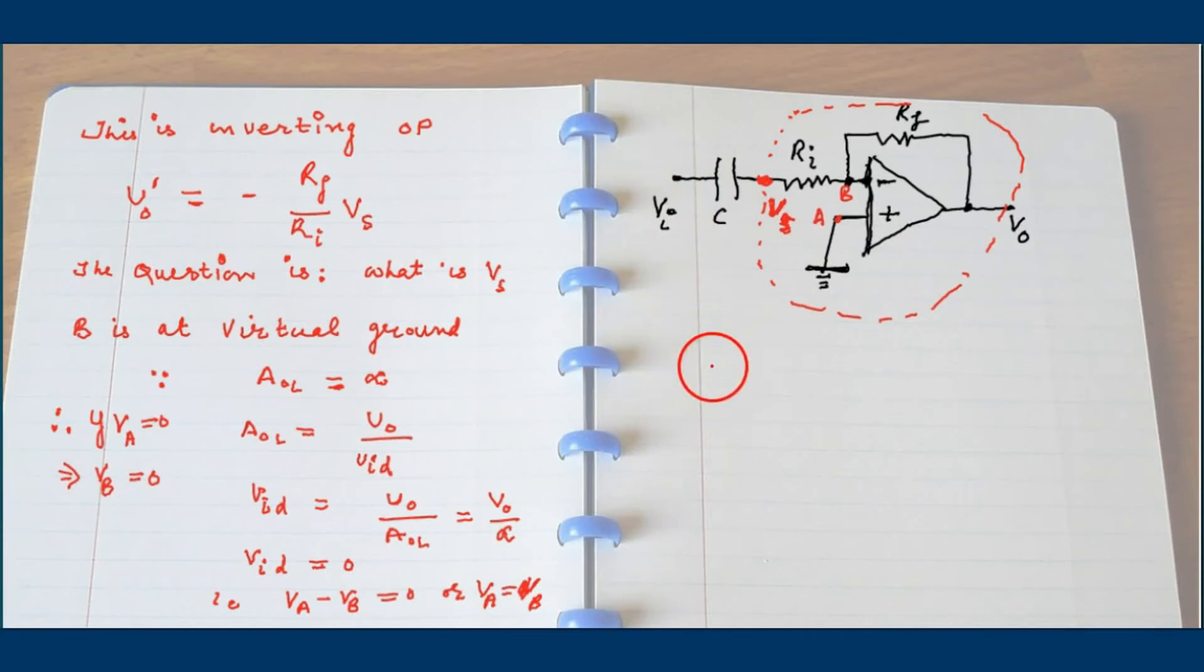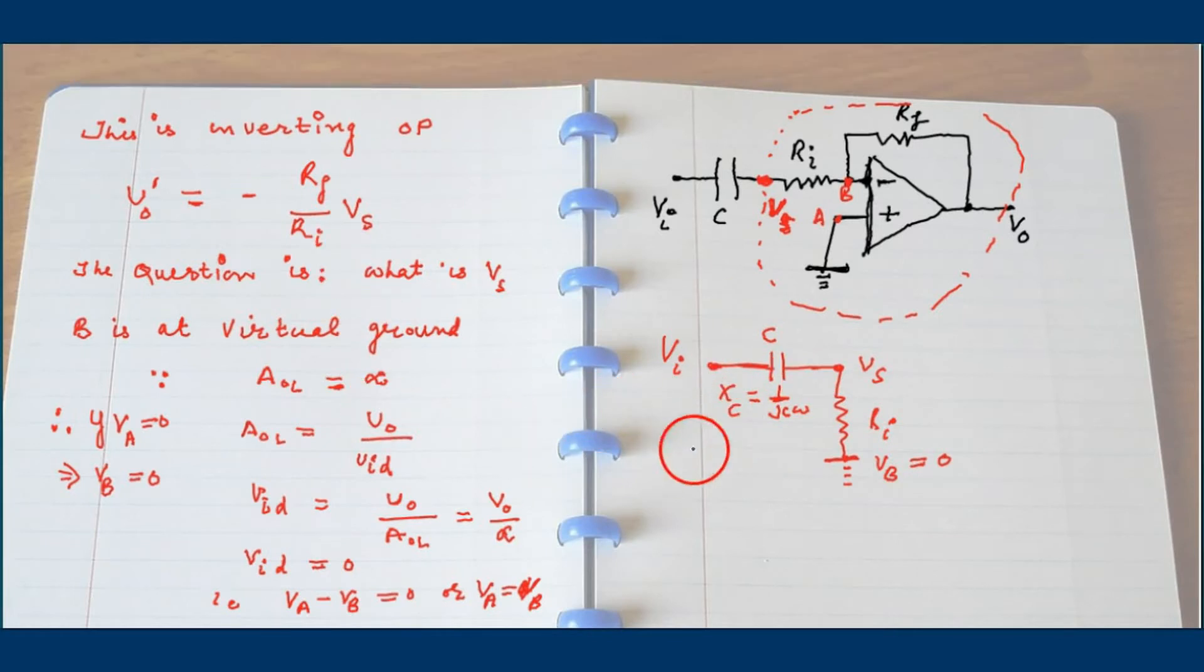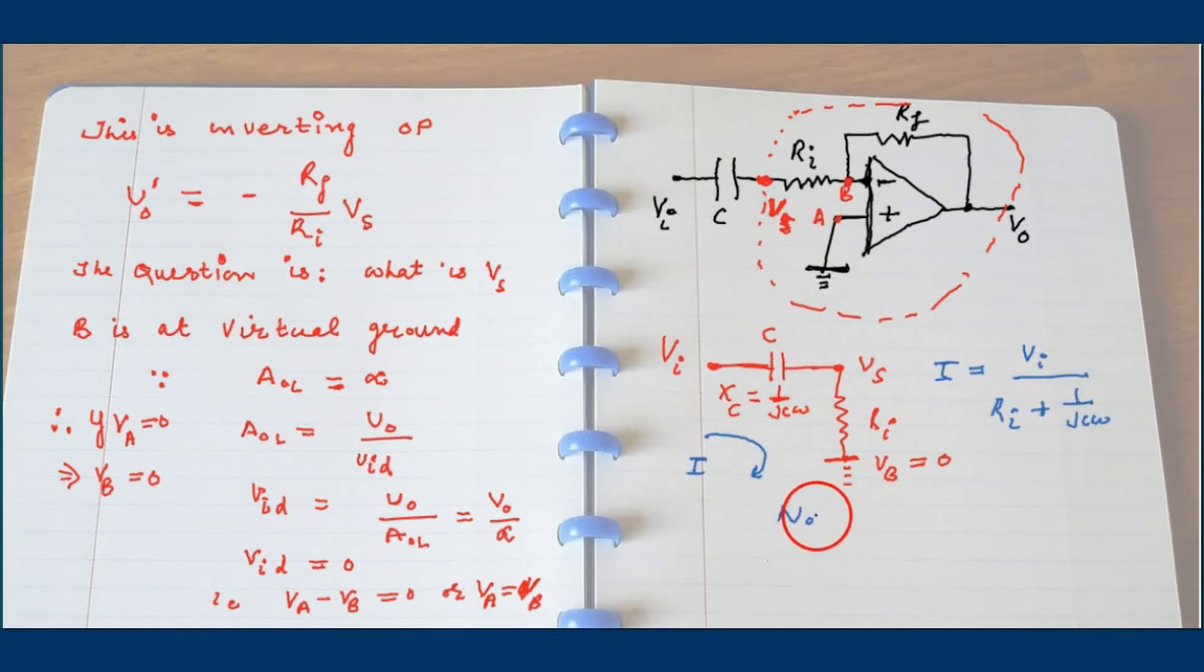Now the question is what is Vs if VI is given to us? This is Vs, this is RI. Point B is ground potential, so this is ground potential zero. The reactance is 1 over jC omega, reactance of the capacitor, 1 over jC omega. And the current flowing through this loop is I.